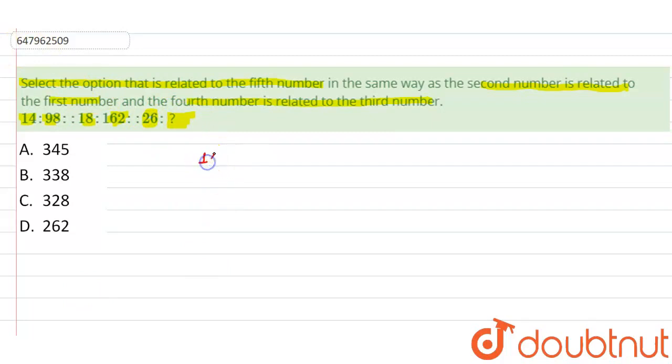यहाँ पर मुझे question क्या दिया: 14 is to 98 और फिर 18 is to 162 और यहाँ पर 26. तो मैं यह देखूंगी 14 से 98 तक यह आया कैसे. अगर मैं यहाँ पर 14 into 14 by 2 कर दूँ, तो मुझे क्या मिल जाएगा? मुझे मिल जाएगा 14 into 7 मतलब 98. ठीक है?